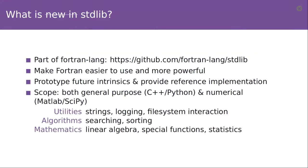Before talking about what's new in the standard library, I think we just need to touch base and make sure we're all on the same page about what it is. This is a volunteer effort maintained under the Fortran-lang organization. The code is all hosted on GitHub at github.com/fortran-lang/stdlib. One aim of the standard library project is to serve as a testing ground for future intrinsics and to provide reference implementations — a community-based way for Fortran users to get access to new intrinsics before they're implemented in compilers.